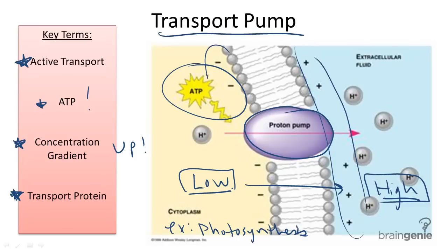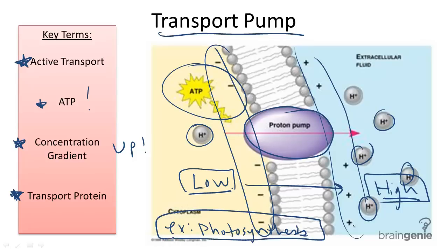As you can see, moving these hydrogen protons from an area of low to a high concentration of these protons creates a differential in charge, which is helpful during photosynthesis when we want to take carbon dioxide and turn it into sugar.